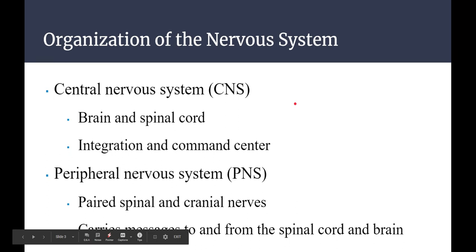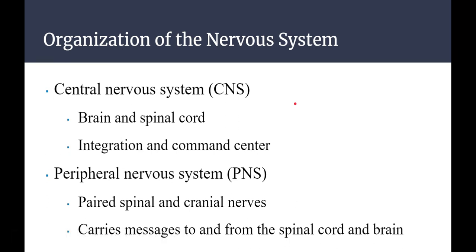The organization of the nervous system: the two main parts are the central nervous system and the peripheral nervous system. The central nervous system is the brain and the spinal cord — that's obviously where the majority of integration happens and it's the central command station. You also have the peripheral nervous system, which is the different spinal and cranial nerves that send messages from the brain and spinal cord out to the rest of the body.